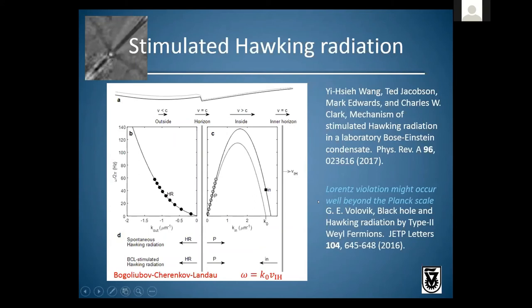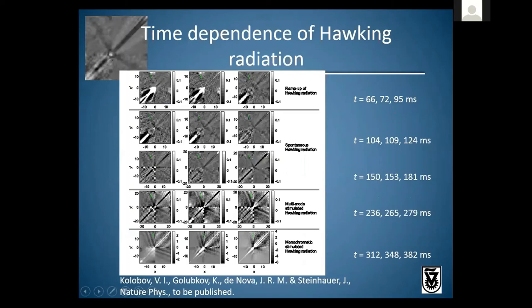One might ask: could a real black hole have an effect like this? It would require Lorentz violation, which might occur at some energy scale well beyond the Planck scale, as discussed in the literature. These pairs hit the outer horizon and emit additional Hawking and partner pairs — the partners of the negative-energy particles which fall into the black hole.